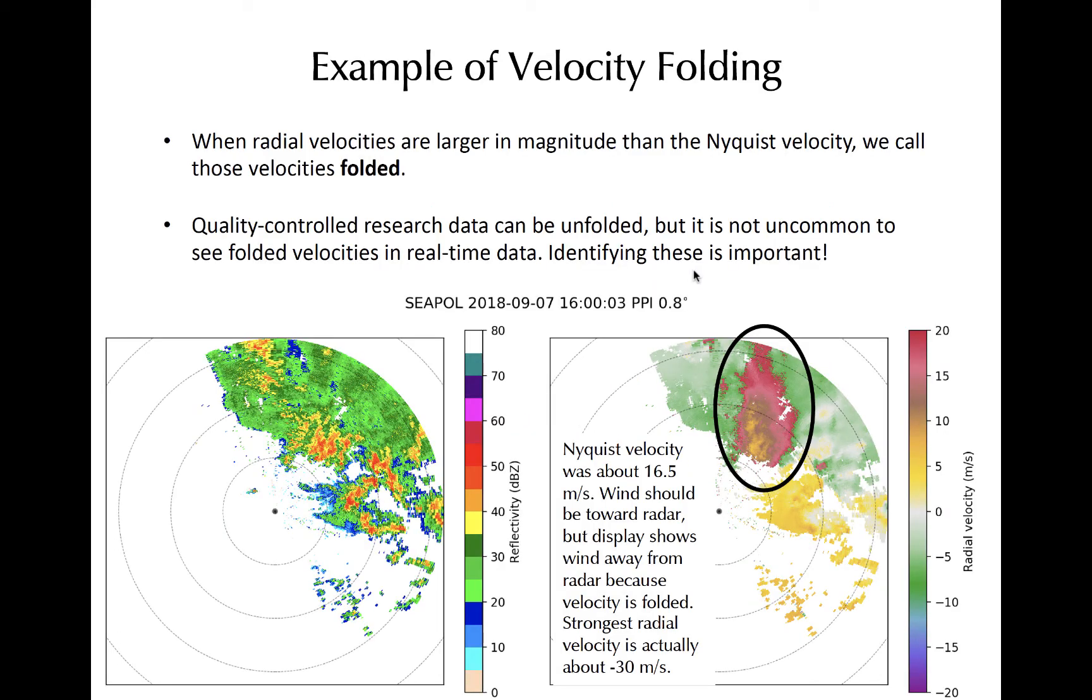One challenge of working with Doppler radar is unfolding the radial velocities, especially in cases where strong winds occur. Often, real-time data will not be automatically unfolded. One example from a ship-based C-band radar looking at strong winds in a mesoscale convective system over ocean is shown here, with radar reflectivity factor shown on the left and reported radial velocity illustrated on the right. The precipitation to the northeast of the ship consists of a leading line of convection with a large trailing stratiform region that extends off the image to the northeast because it is located beyond the maximum unambiguous range set by the PRF used.